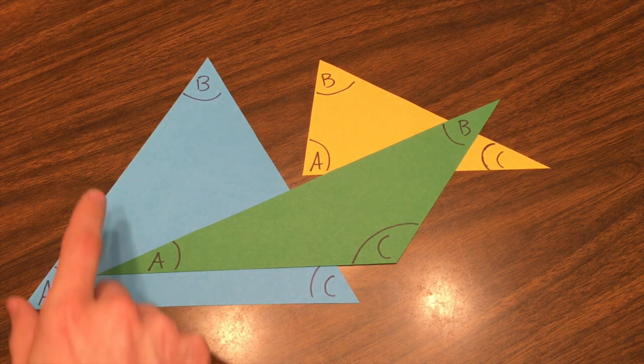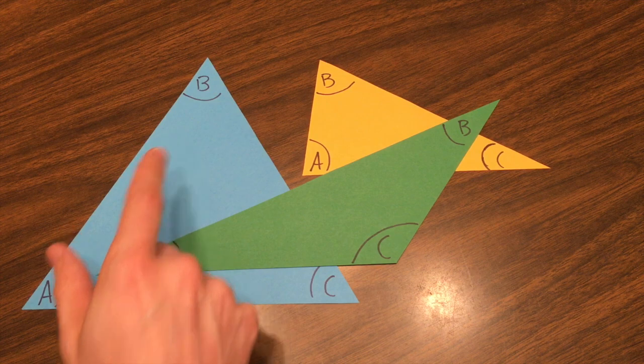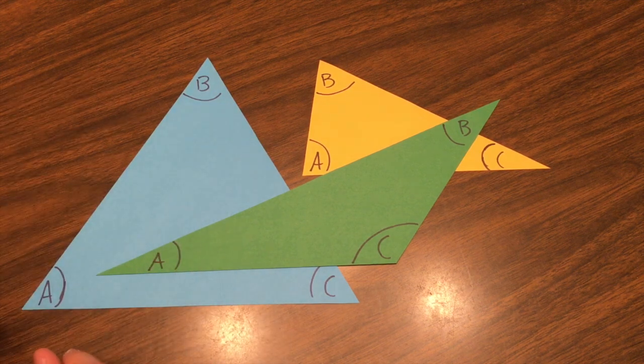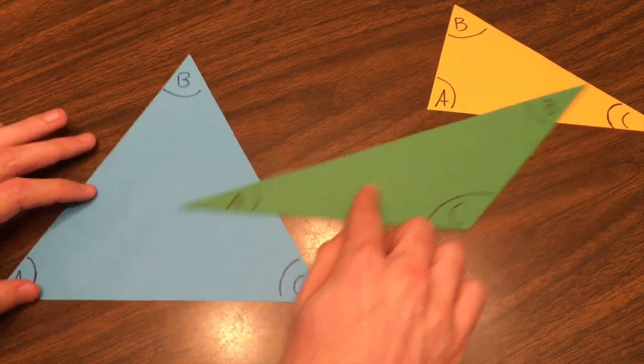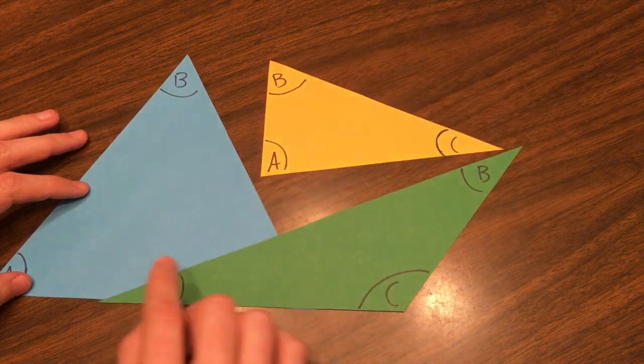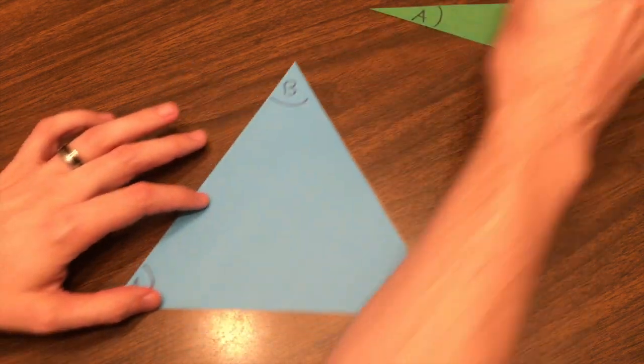To do that, I've taken some pieces of colored paper and I've cut them into some various triangles. I have an equilateral triangle, an obtuse triangle, and an acute triangle. Let me first show you with the equilateral triangle.